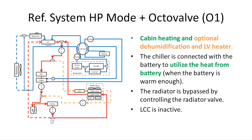This slide shows the mode when the refrigerant system is at heat pump mode and the octa valve is at O1 state. The cabin is heated by the cabin condenser, and the chiller is connected with the battery to utilize the heat from the battery. The radiator is bypassed by controlling the radiator valve. The liquid-cooled condenser is inactive in this case.